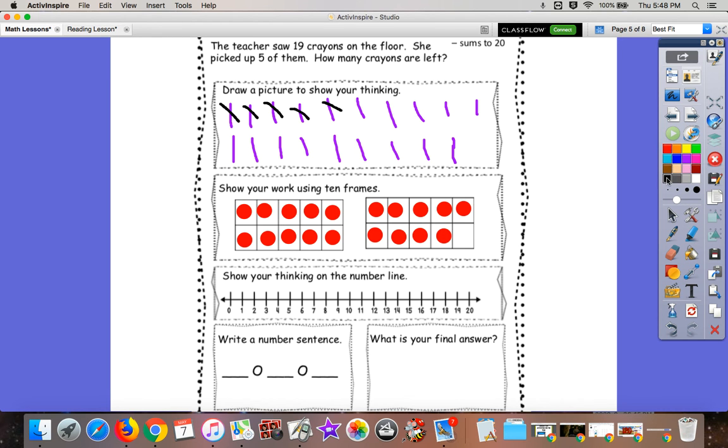So the teacher had 19 crayons on the floor. The teacher picks up how many of them? Five. Let's cross off five. 1, 2, 3, 4, 5.